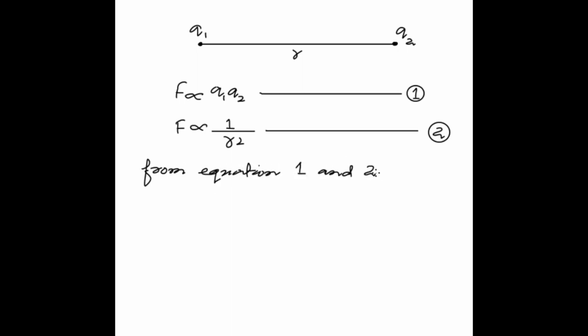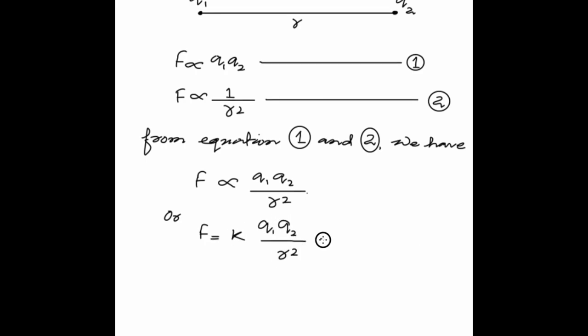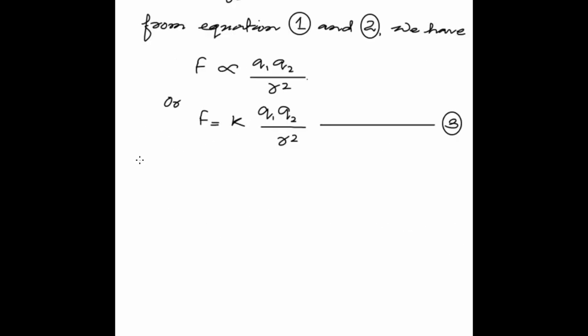From combining the two proportionality relations, F is directly proportional to Q1 times Q2 divided by R squared. So we can write F is equal to K times Q1 Q2 upon R squared, where K is a constant of proportionality.